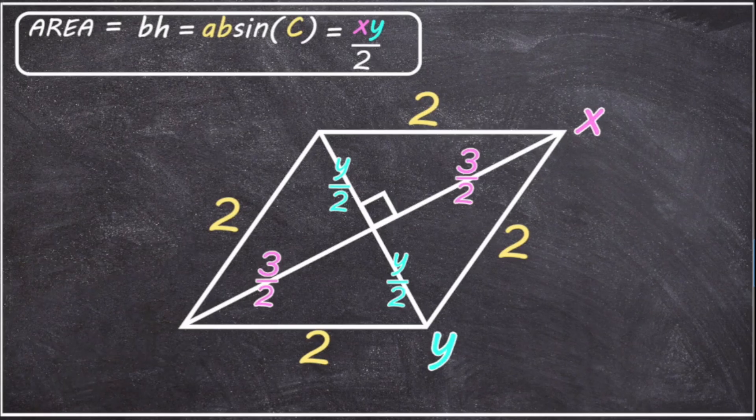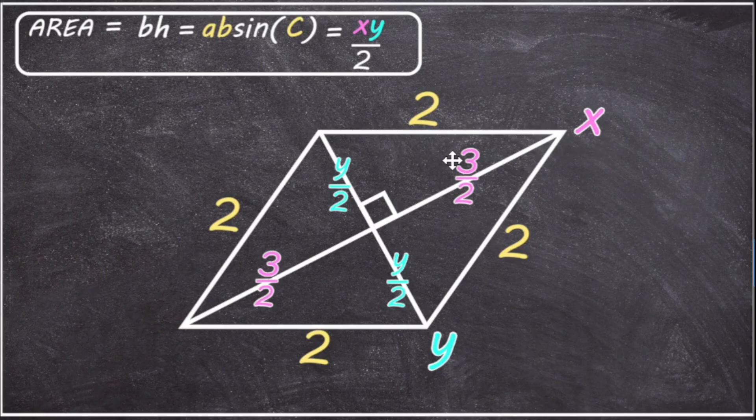Now let's just focus on the top right hand triangle. In a right angle triangle, the hypotenuse is the longest edge, which is also the edge that's opposite to the right angle. In Pythagoras, the sum of the squares of the other two edges is equal to the square of the hypotenuse. And so that means that Y over two squared plus three over two squared must be equal to two squared.